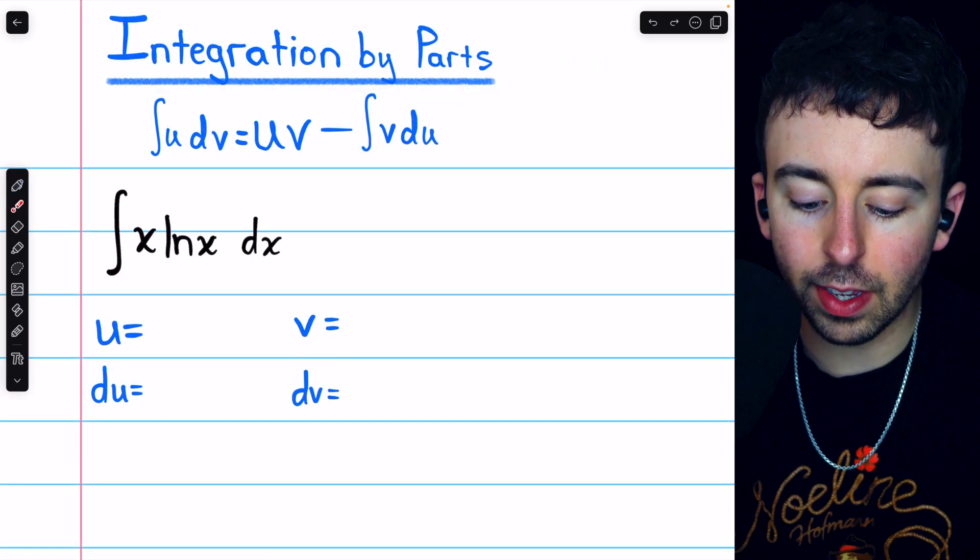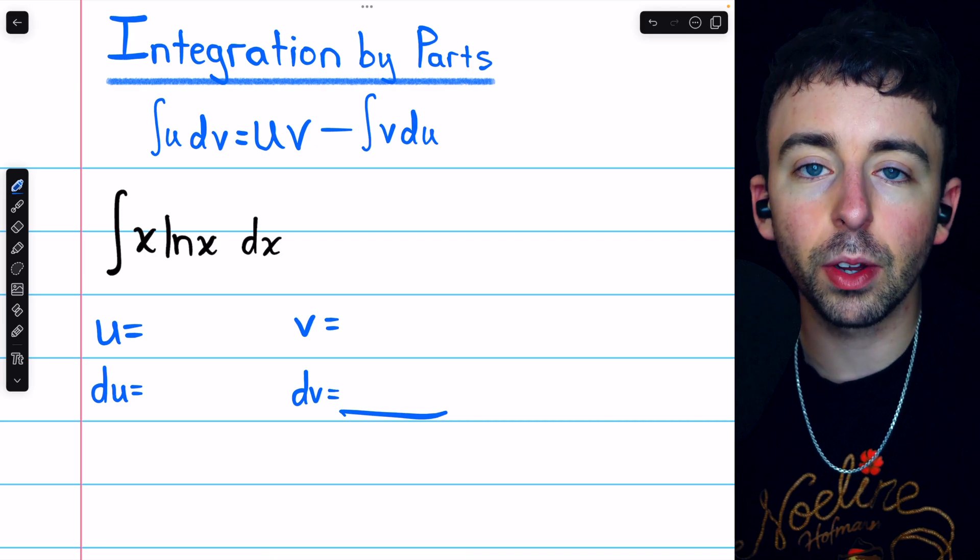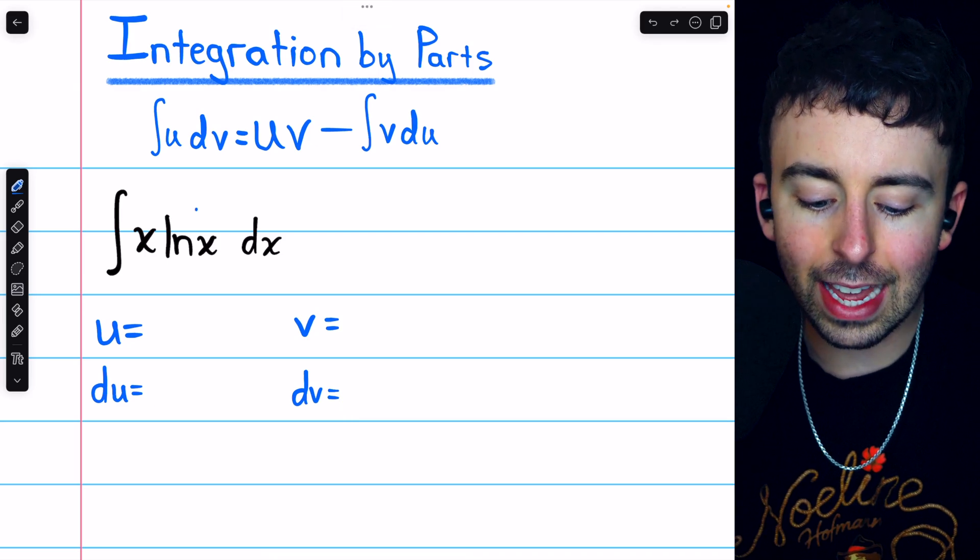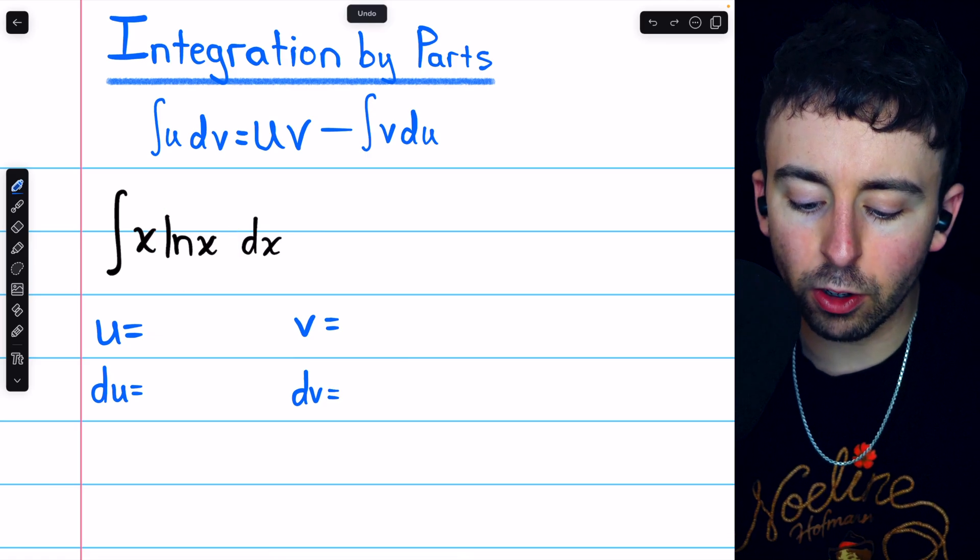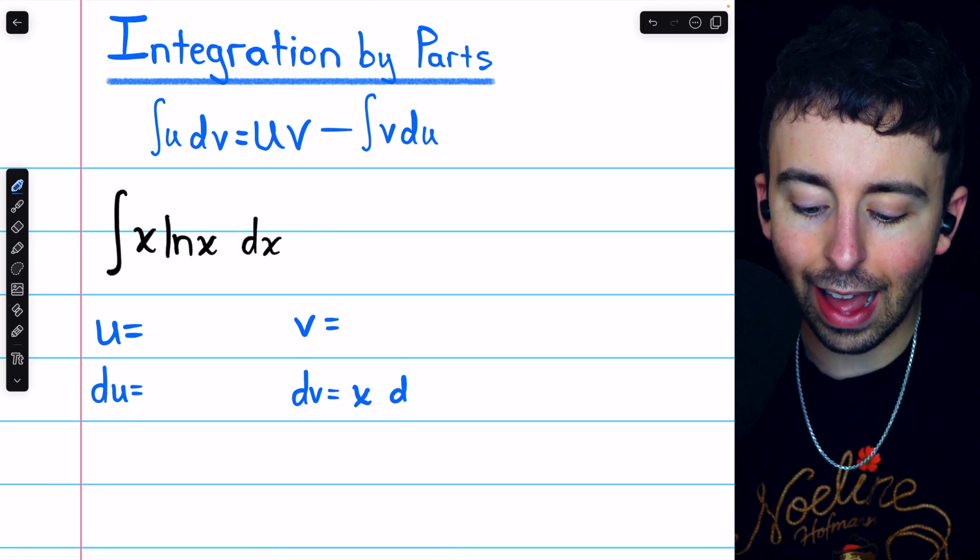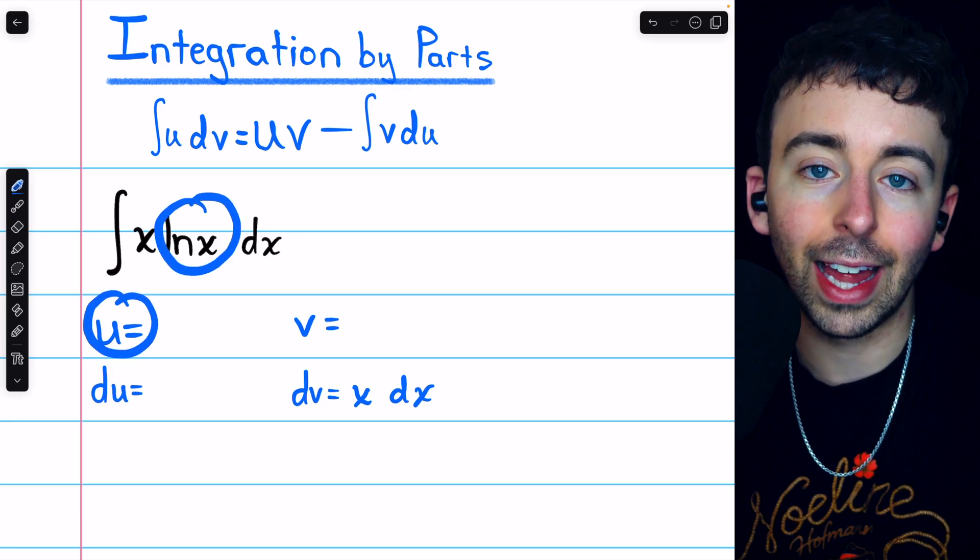Since we have to integrate dv to get v, we want to make sure that dv is something we can integrate. We can integrate ln(x), but that gets pretty messy, so we might want to try letting dv equal x dx, and then that will leave u to equal ln(x).